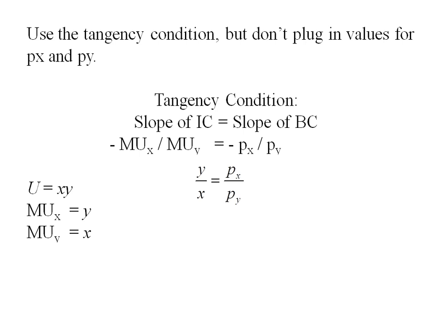Plugging into my tangency condition I'll have y over x equals px over py. Doing a little simplifying, y equals px over py times x. So this will be one of the equations that we use. The second one will be our general budget line, having I instead of 72 and just leaving px and py instead of plugging in for prices.